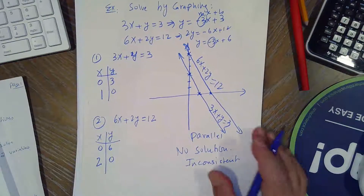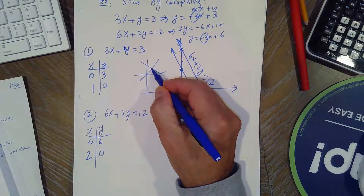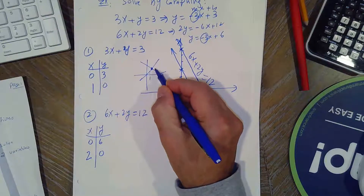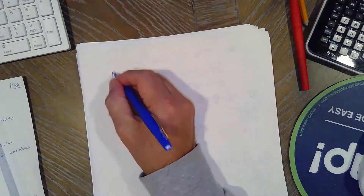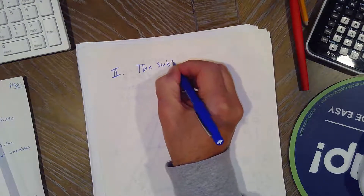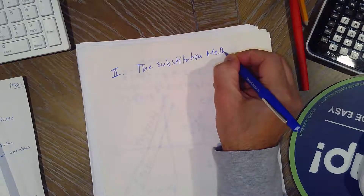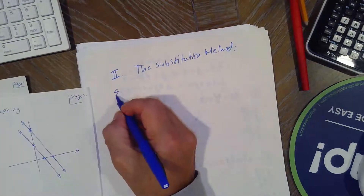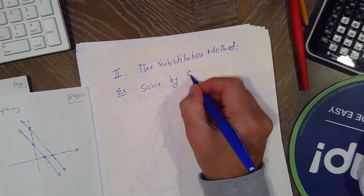The graphing method is the best visual method, but the problem is if the lines cross, sometimes we won't be able to find exactly where they cross if it's a non-integer solution. That's why we're going to discuss two algebraic methods. The second method is the substitution method, which will give you the solution no matter what.